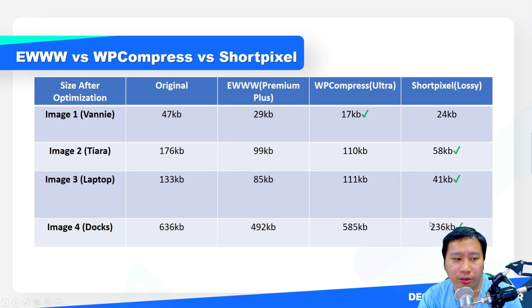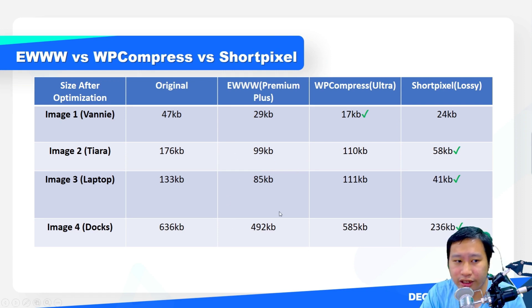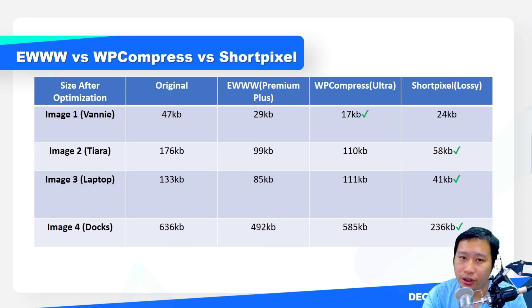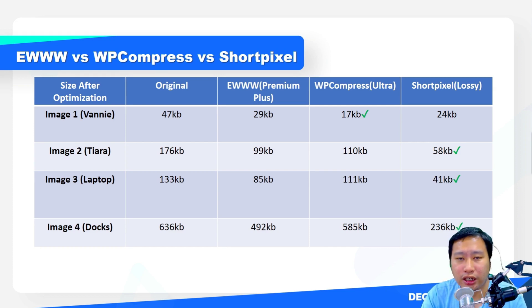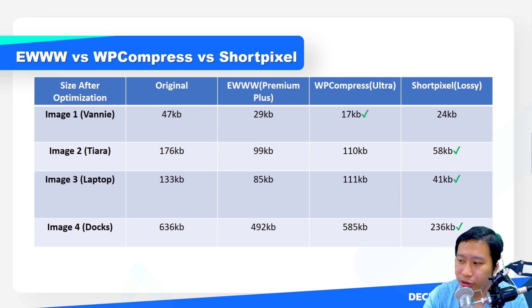For most image sizes, Short Pixel offers a much smaller file size. However, don't miss out on Ewww as well, because it's consistently the second-best for compression. Ewww also offers unlimited image optimization, free WebP conversion with no additional credits, a generous CDN, lazy loading, and JavaScript and CSS optimization. Feature-wise, Ewww is definitely much broader than what Short Pixel does — Short Pixel really just focuses on being really good at image optimization.